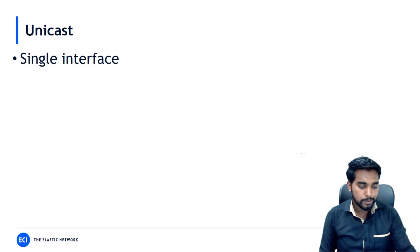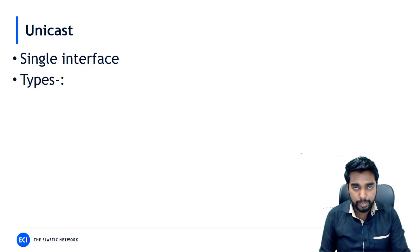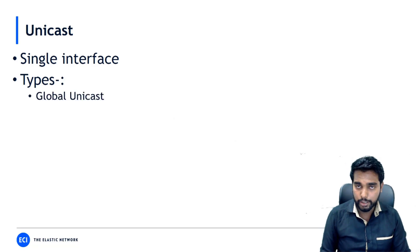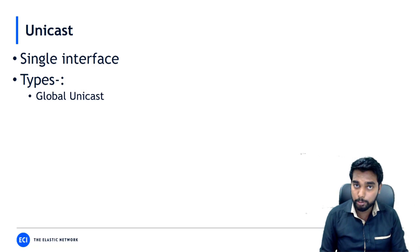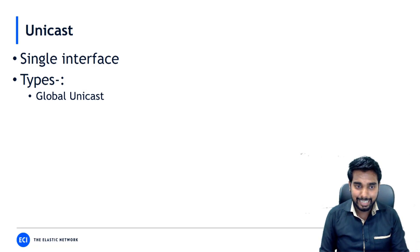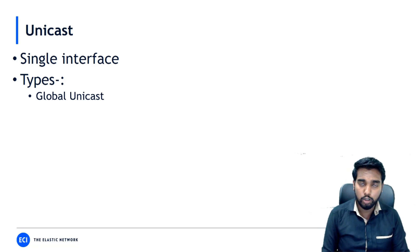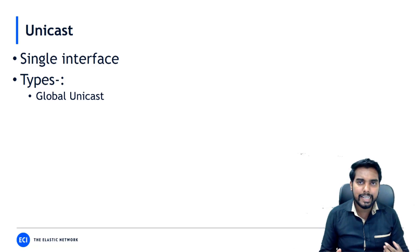Let's see the types of unicast addresses. The first type we're going to discuss is global unicast. These are new terms but easy compared to IPv4. A global unicast is an address that can be routed globally, meaning it can be used on the internet.